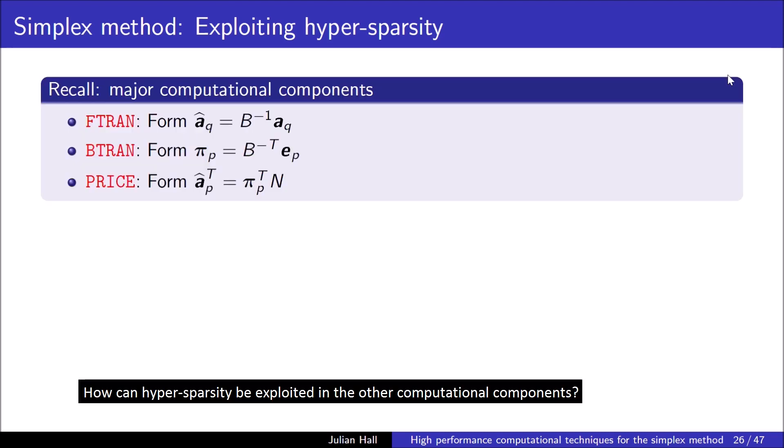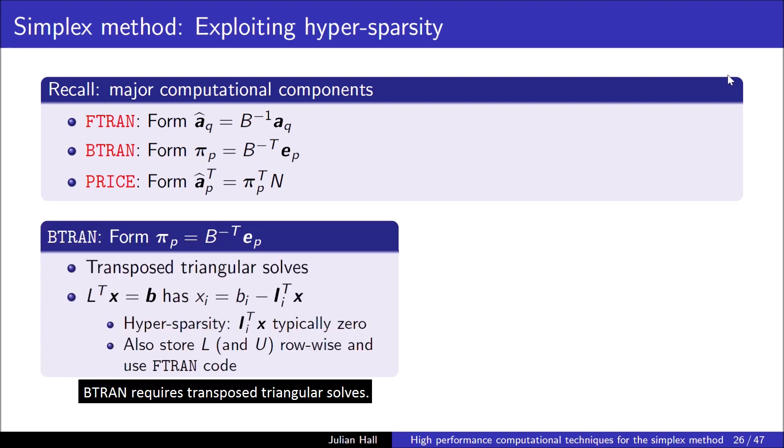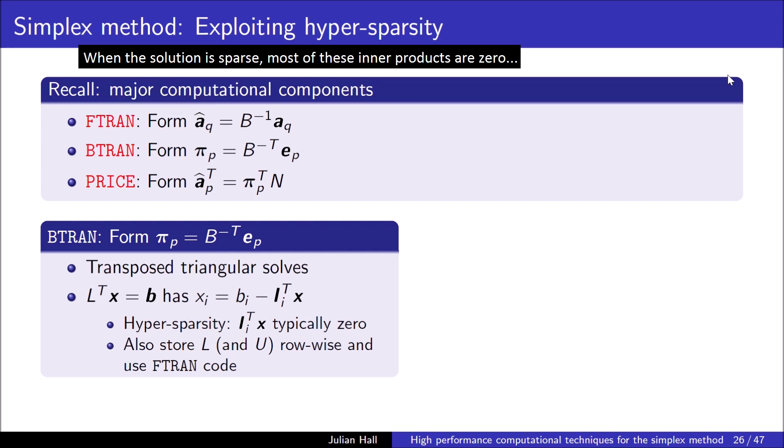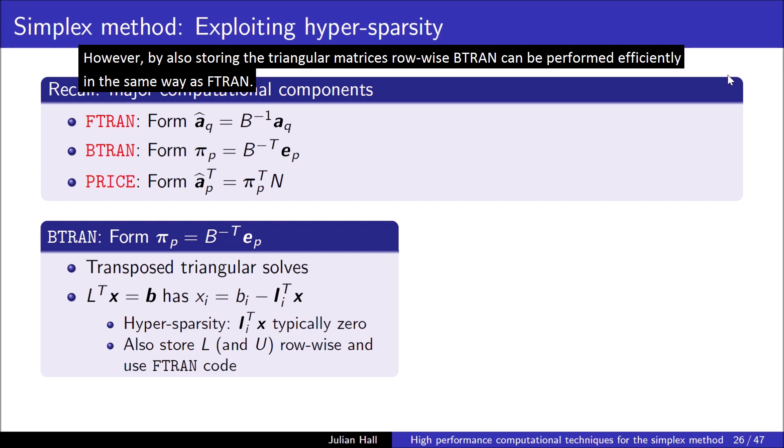Graph traversal techniques are used to identify the set of indices of the non-zero values of rj efficiently. How can hypersparsity be exploited in the other computational components? BTRAN requires transposed triangular solves. These can be performed by backward substitution, in which each component of the solution is formed using an inner product between a row of the upper triangular matrix and the components known to date. When the solution is sparse, most of these inner products are 0, because the intersection of the sparsity patterns of the solution and matrix row is empty. But this cannot be identified efficiently. However, by also storing the triangular matrices row-wise, BTRAN can be performed efficiently in the same way as FTRAN.